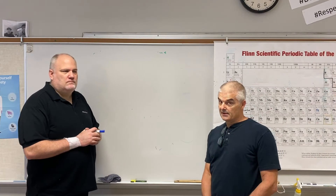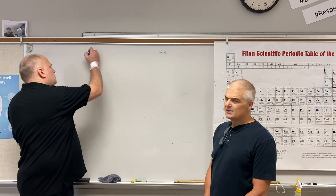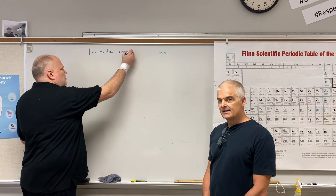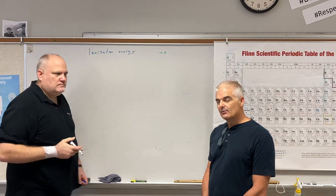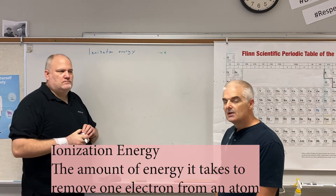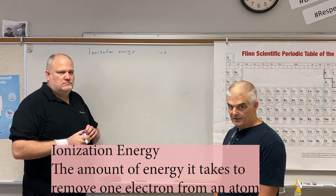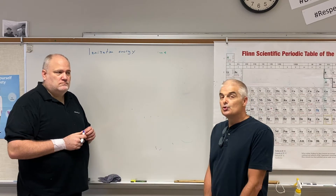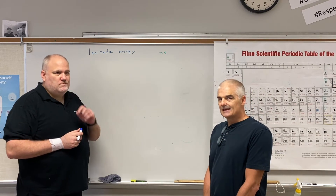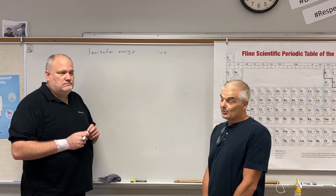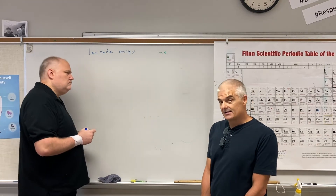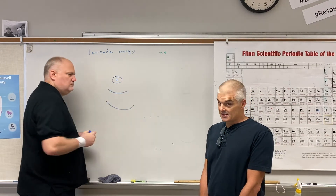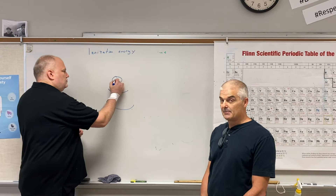The next trend we're going to talk about is something called ionization energy. Think about that for a moment — we're ionizing, making something into an ion. This is the amount of energy it takes to remove one electron from an atom. Ultimately, this comes down to size. Who's holding on to the electrons the tightest helps you determine who has the highest ionization energy. This comes back to the ionic size or radii that we talked about at the top of the video.